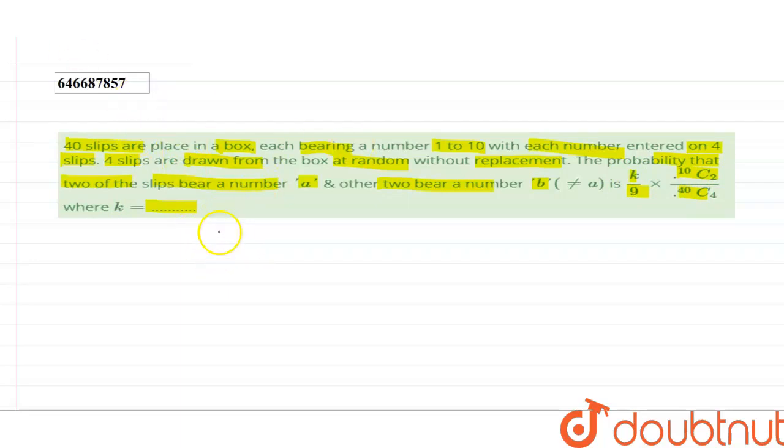How many slips are there? 40 slips are there, which is 4 times the numbers 1 to 10. That information is already given.